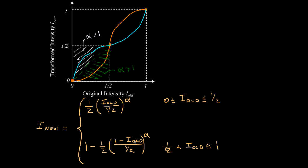When the input intensity is 1/2, 1 minus 1/2 is 1/2, divided by 1/2 is 1, raised to the alpha is 1. So we'll have 1 minus 1/2, and that'll put us back to this location.